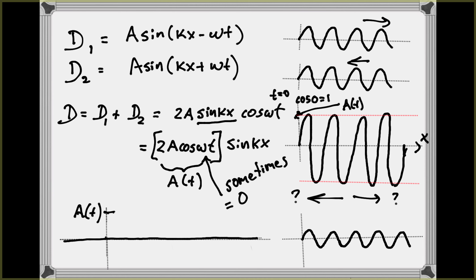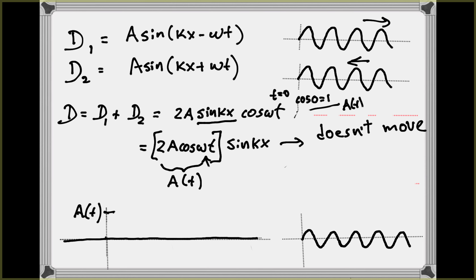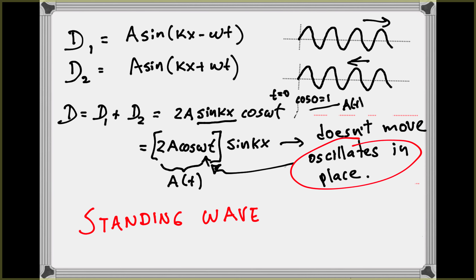Notice that A(t) = 2A·cos(ωt) can be zero — for example when ωt = π/2, 3π/2, etc. — so at those moments the wave is completely flat. The resulting wave doesn't move to the right or to the left; it simply oscillates in place, with the amplitude growing large and then shrinking to zero and back again. This is called a standing wave because it doesn't go anywhere — it's a wave that stands in place.